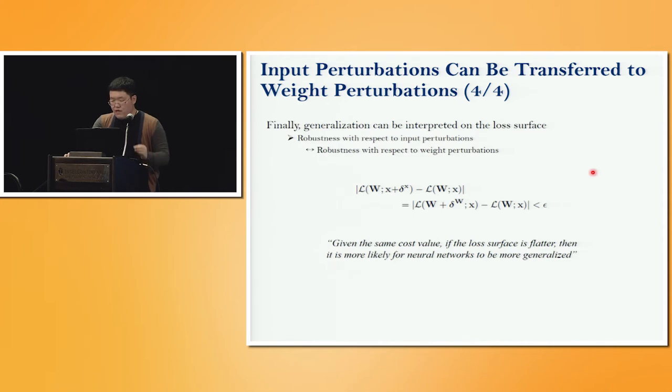Finally, we can interpret generalization on the loss surfaces. We already know that robustness to input perturbations makes better generalization. Therefore, we can transfer input perturbations to weight perturbations. And now, robustness to weight perturbations also makes better generalization.